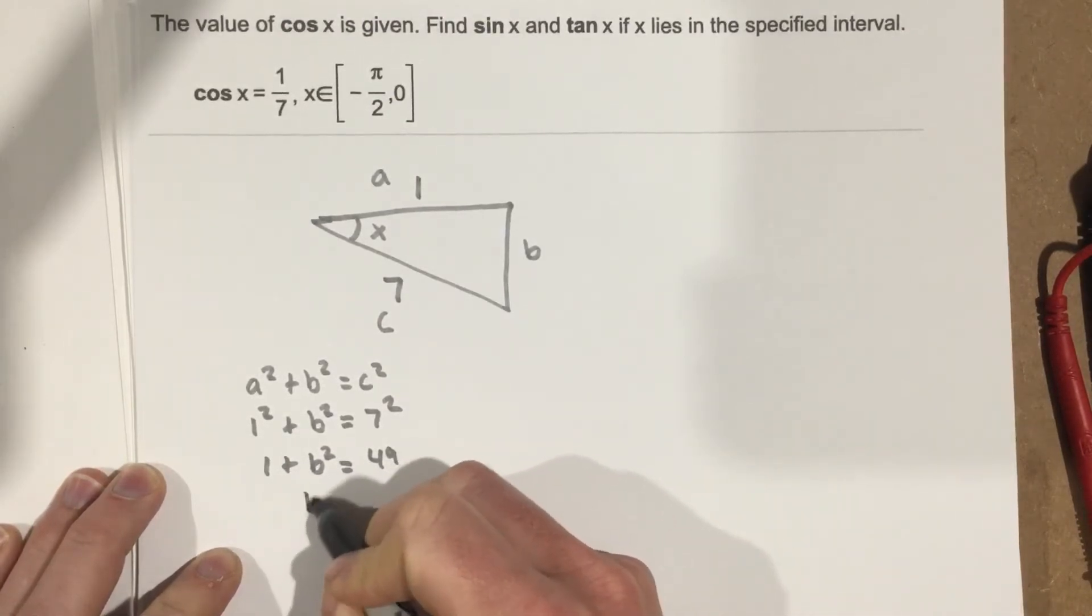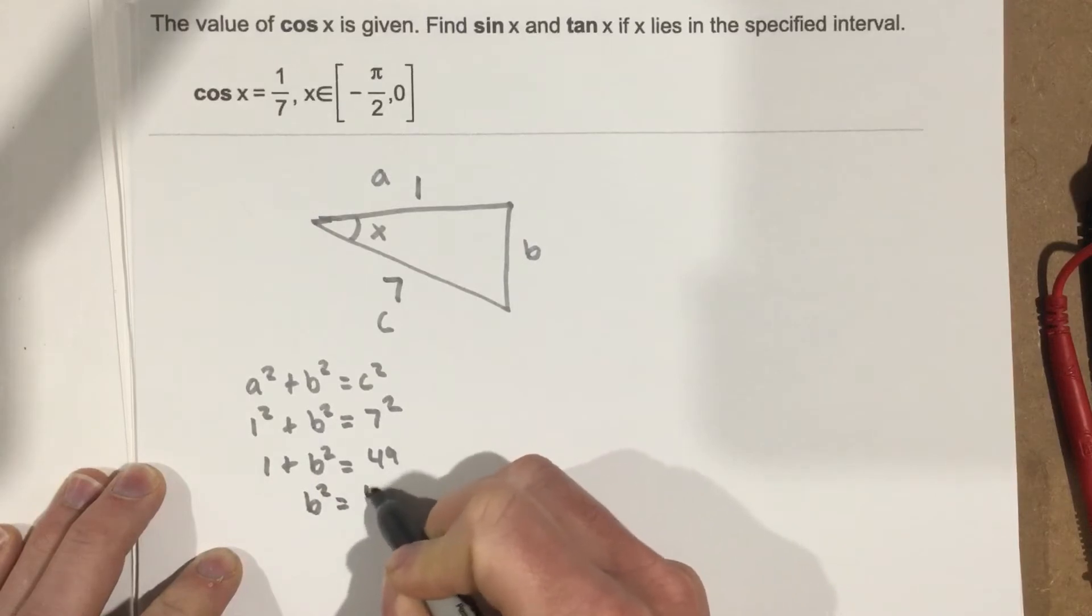So we end up with 1 plus B squared equals 49. Subtract the 1, we end up with B squared equals 48. We're going to do the square root. So we end up with B equals root 48.